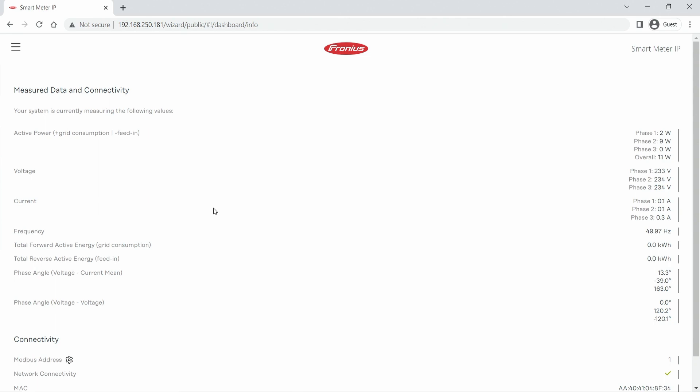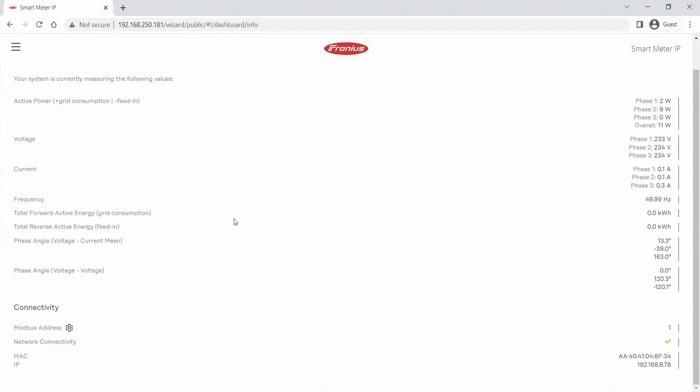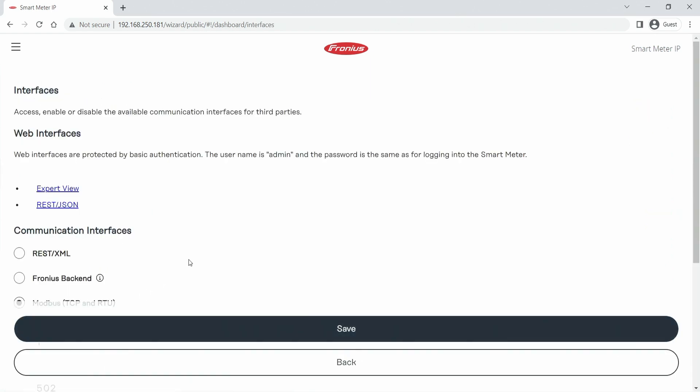Alright, when we have entered the web interface we can see here the already installed system, so measured data and connectivity. When we scroll down we come to the page connectivity, and further down below we can read Modbus address which is set to 1.